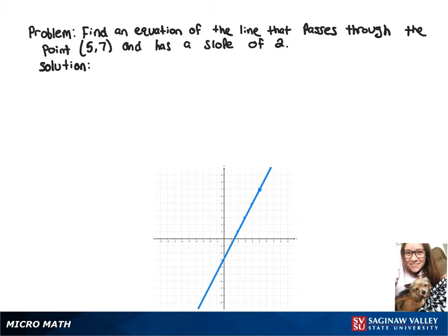To find the equation of this line, we're going to look at the point-slope form, which is y minus y1 equals m times x minus x1.